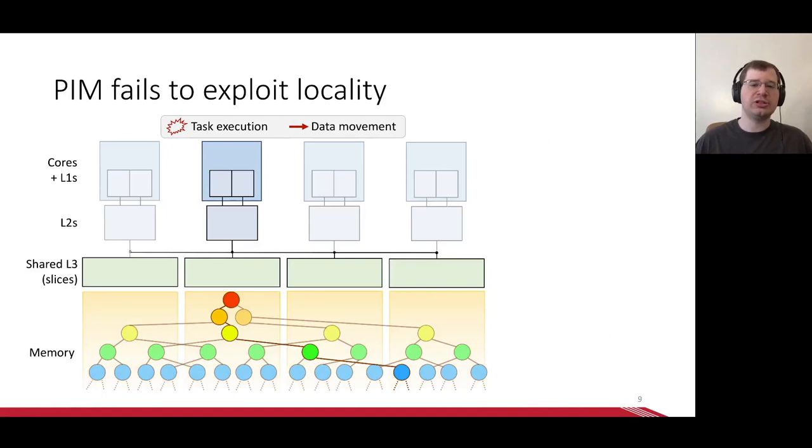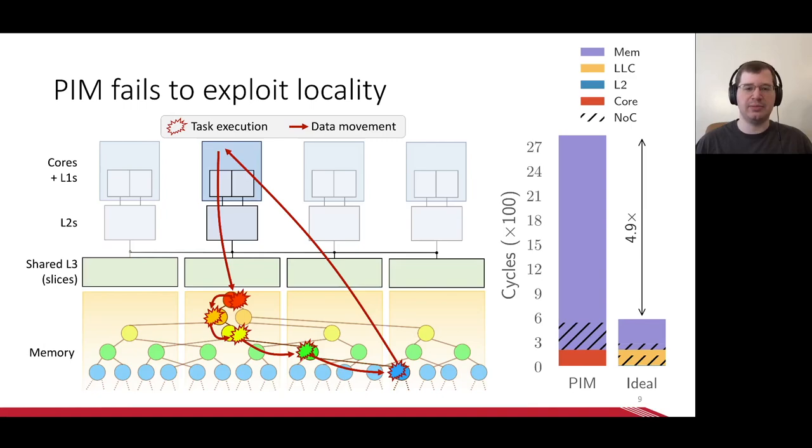Some recent research systems address this by moving execution to the memory controllers, which we'll call processing in memory, or PIM. Unfortunately, these systems struggle to exploit locality. Every access that was a cache hit for the CPU becomes a DRAM load, and DRAM loads are very expensive, so PIM takes almost five times as long as CPU.